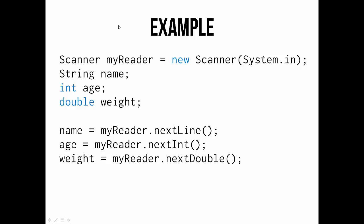Quick example here. If I declare a scanner object, I'm calling it myReader, so I'm instantiating it and I'm saying that we're going to use the keyboard. Okay, look, I declare a string, I declare an int, I declare a double, and I can use that same scanner object to read sequentially three different things from the user.